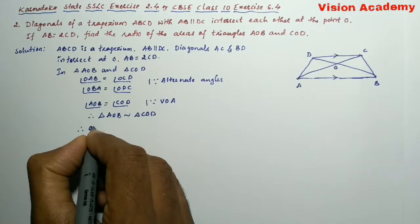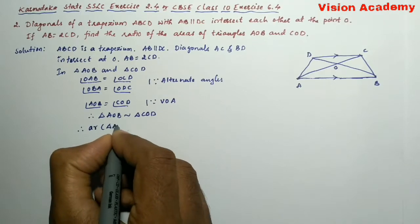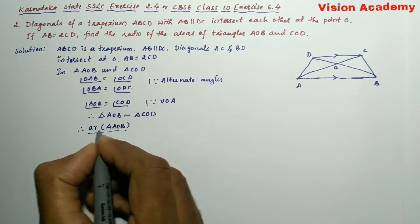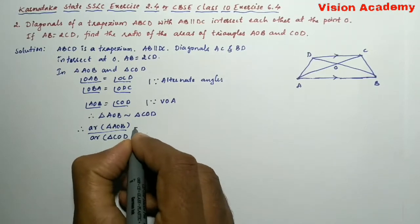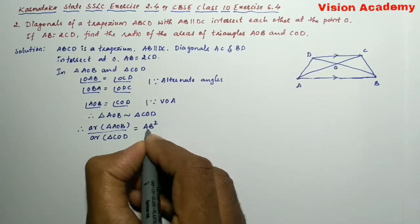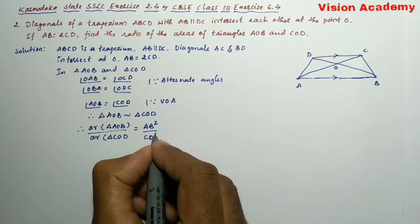Therefore, we can write area of triangle AOB divided by area of triangle COD is equal to AB square divided by CD square.